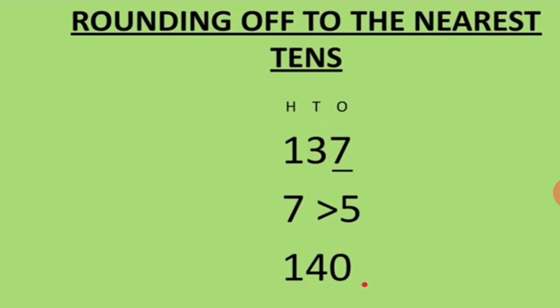So 1 will remain 1. 3 plus 1 is 4, and 7 will become 0. So we got 1, 4, 0 — that is 140.